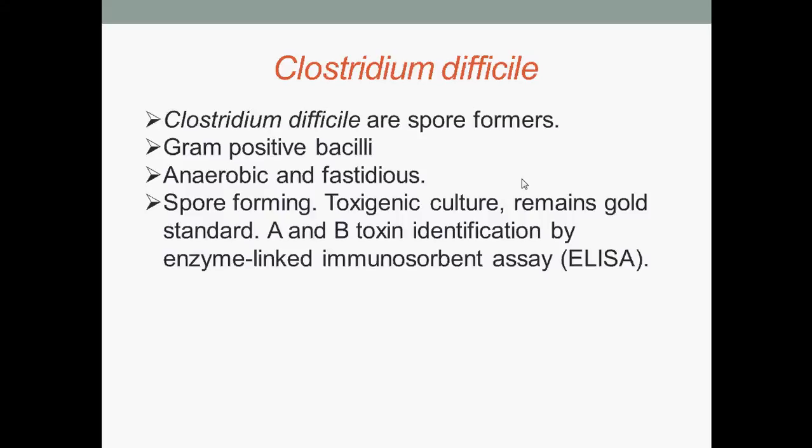The next bacterium is Clostridium difficile. Clostridium difficile are spore formers, gram-positive bacilli, anaerobic and fastidious. A toxigenic culture remains the gold standard — this is a process in which organisms are cultured on selective media and tested for toxin production. The A and B toxin identification is done by ELISA, or enzyme-linked immunosorbent assay.